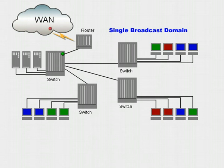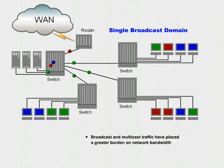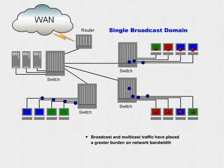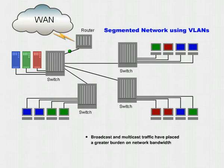As networks have grown and traffic has increased, administrators have been forced to segment their networks into more and more switched subnets to meet increasing performance demands. With these changes, broadcast and multicast traffic have placed a greater burden on network bandwidth. In the worst-case scenario, broadcast traffic can spiral out of control, creating broadcast storms that can bring down the network. Using VLANs offers an effective solution to overworked routers and broadcast storms.